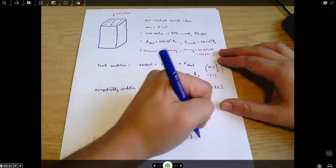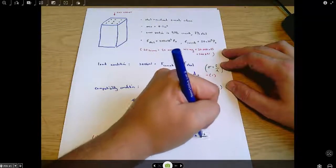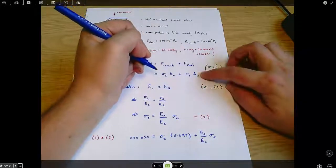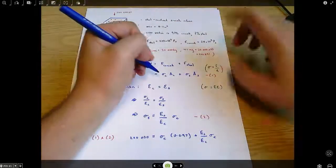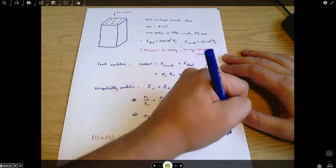Plus the stress in the steel, which I'm going to substitute in this, multiplied by the area of the steel. That's 3% of 0.1 square meters, which is 0.003.